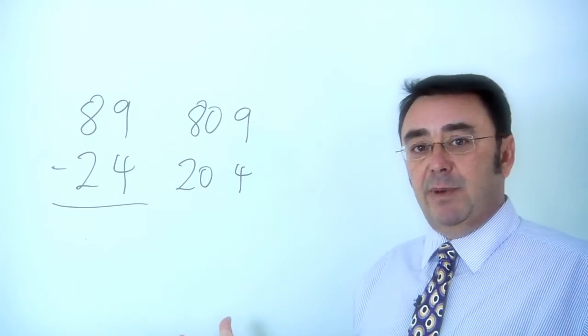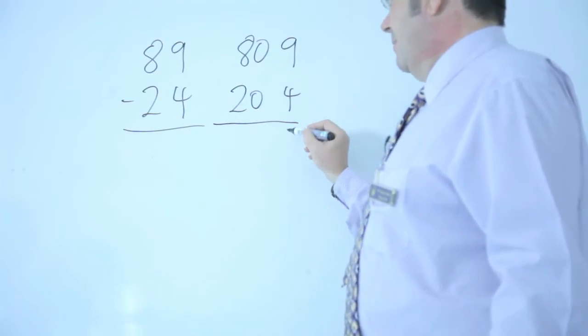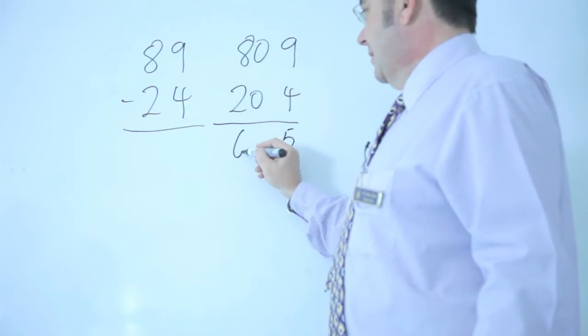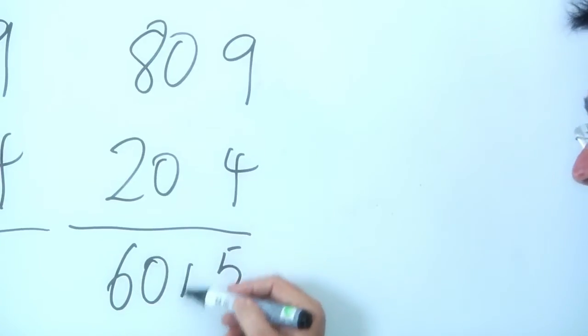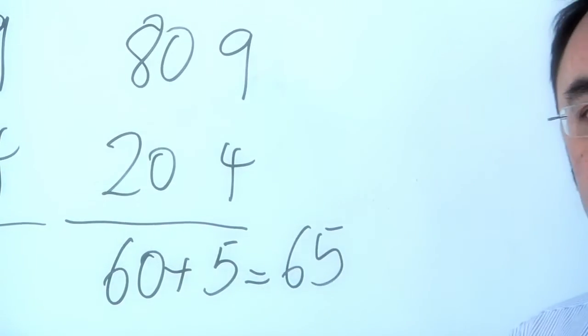That then becomes easier for me to do the subtraction. Put my line there, 9 take away 4, 5, and 80 take away 20 is 60. And then add the two together, put them back together again, which gives me my answer of 65.